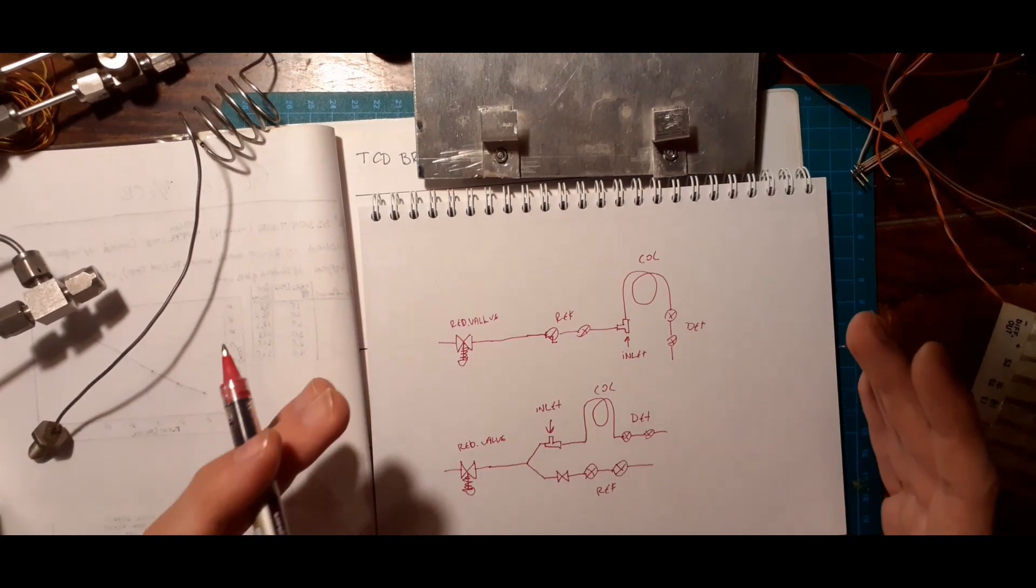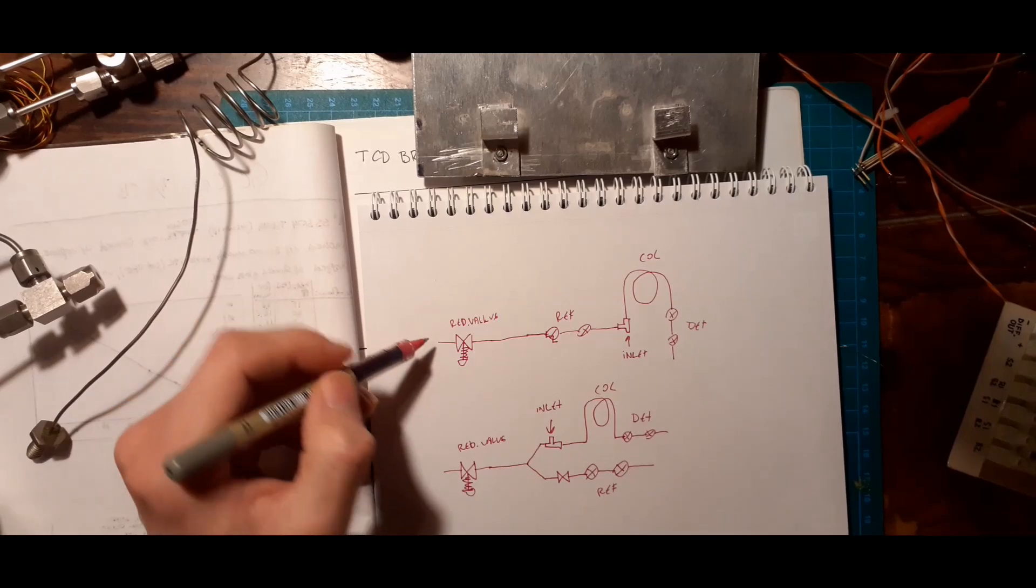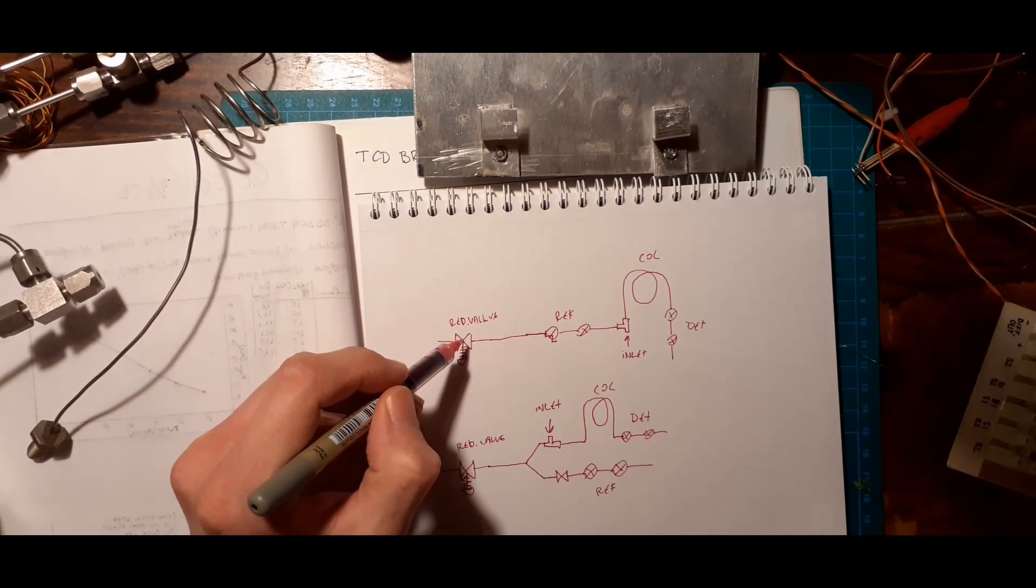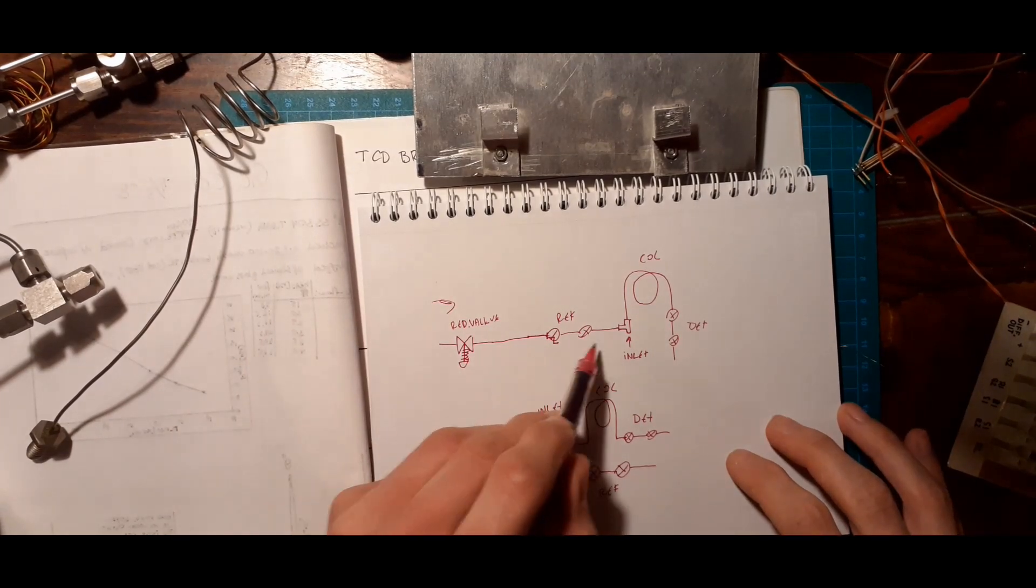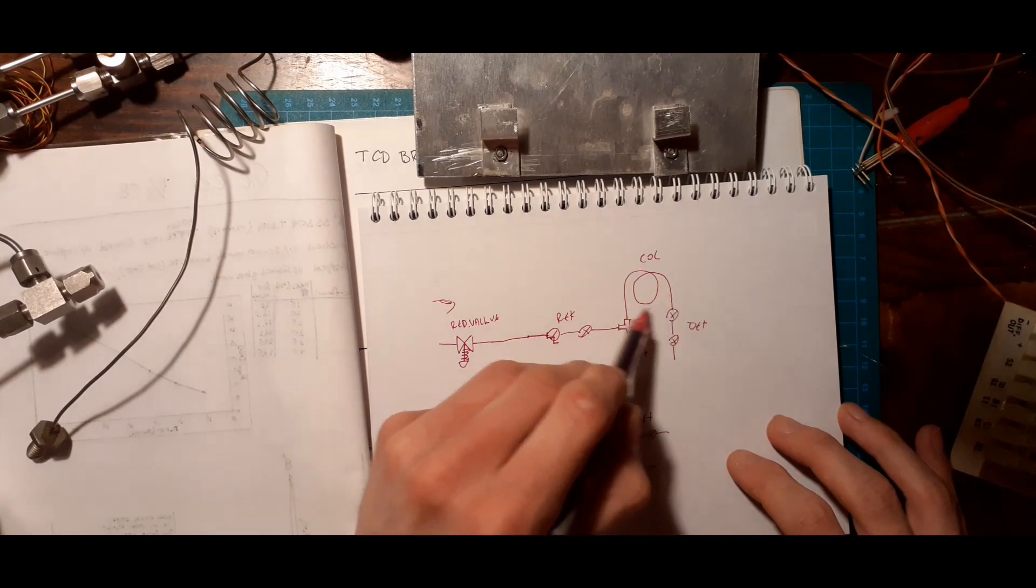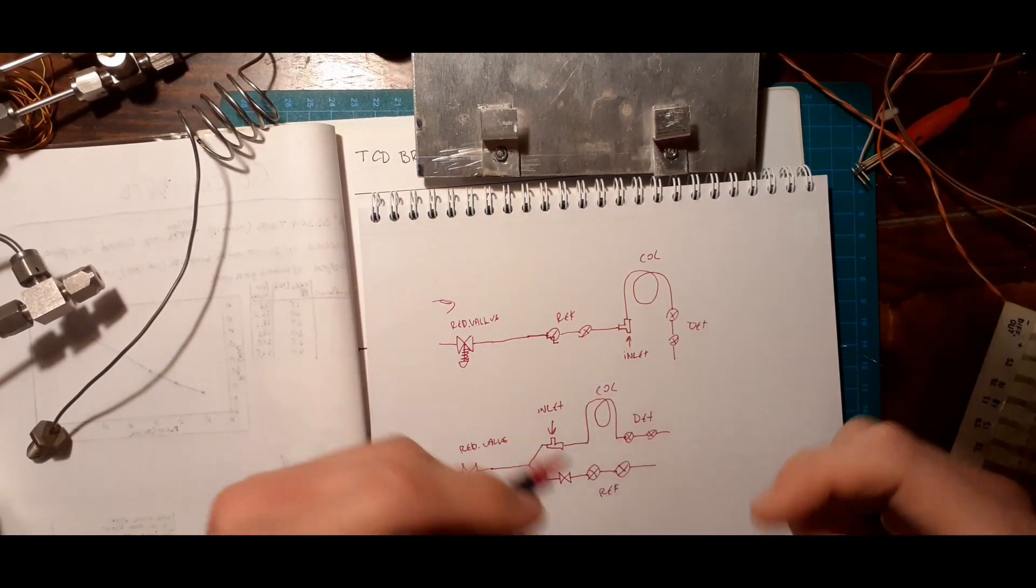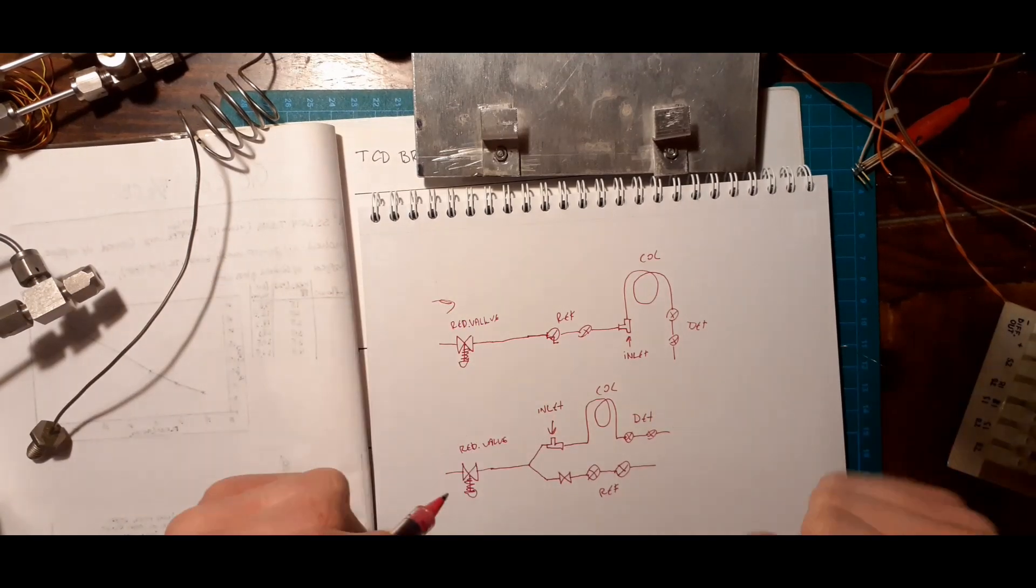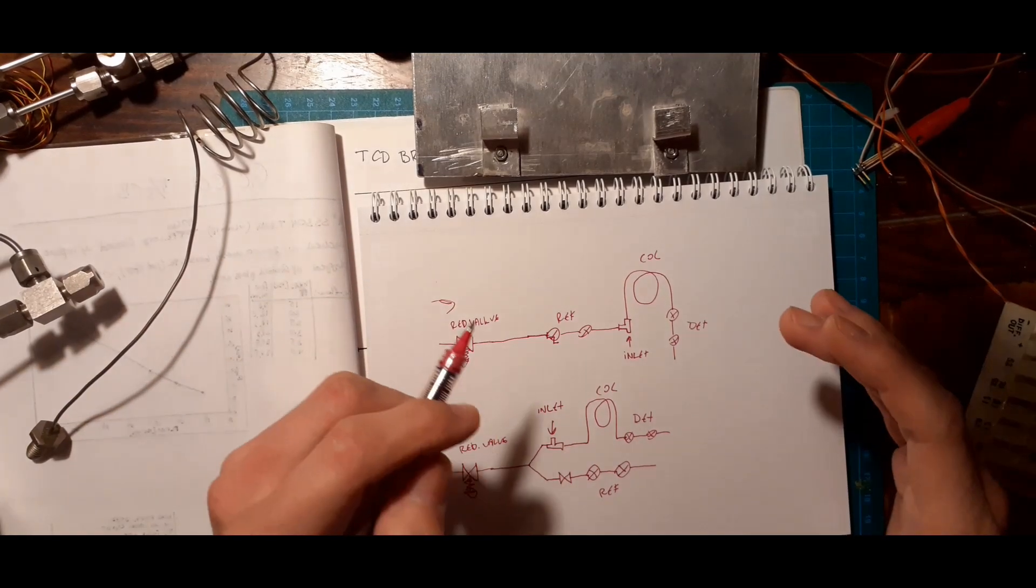Now there are basically two ways of implementing a thermal conductivity detector. That's the one I've done, where you have a reduction valve, or a pressure regulating valve from your tank, and then you have your reference side in series with that, you have your injector where you inject your sample, you have column, and you have the detector side on the other side. This is nice because you know you'll have the same mass flow through both. And I found that simpler.